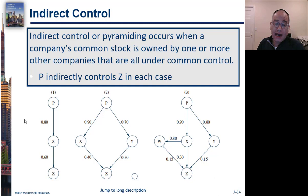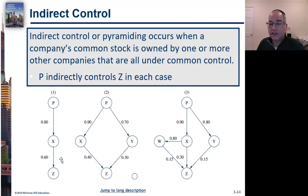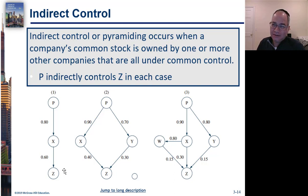Now what could happen is indirect control. For example, the parent owns 80% of X, and then X owns 60% of Z. So when you think about it, the parent really owns 48% of Z — 0.8 times 0.6 — and then there's a real question there.